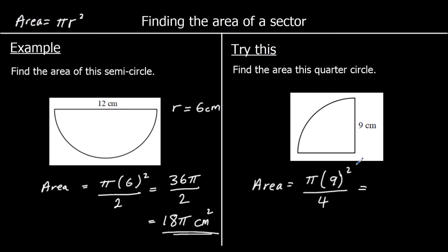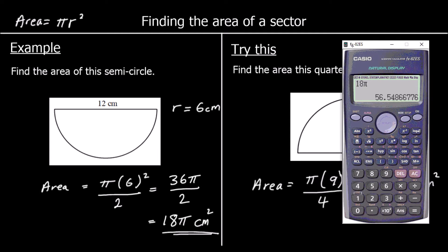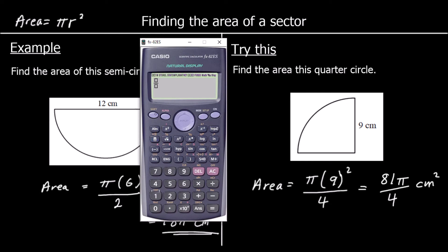9 squared is 81, so we've got 81 pi over 4, and the units are in centimeters squared again. We could type the whole formula into the calculator: pi times 9 squared over 4. So we get 81 over 4 pi, or if we wanted a decimal answer, 63.6 to one decimal place.